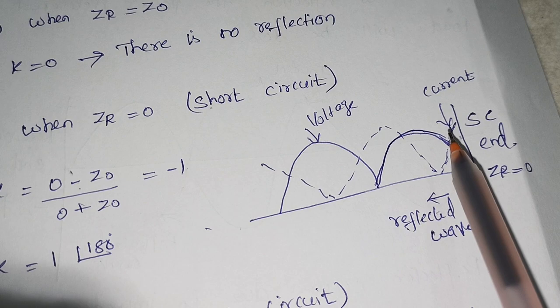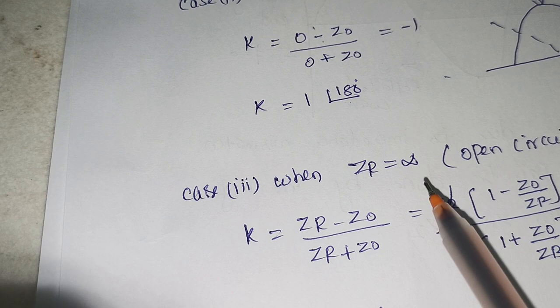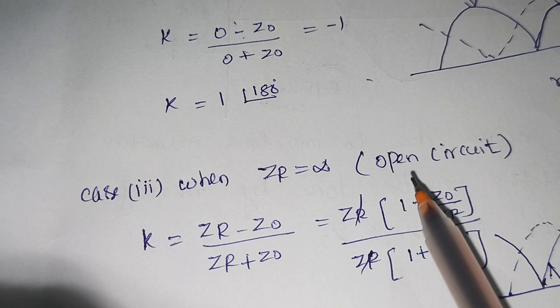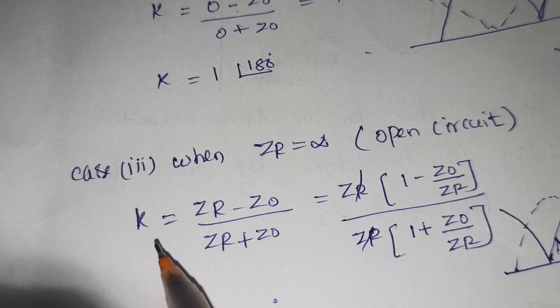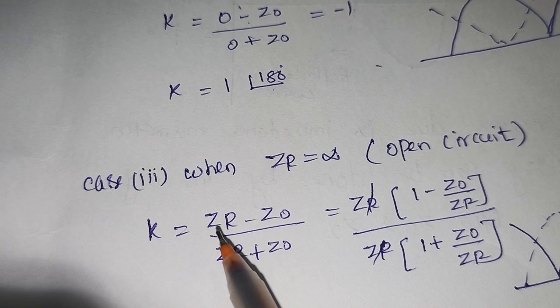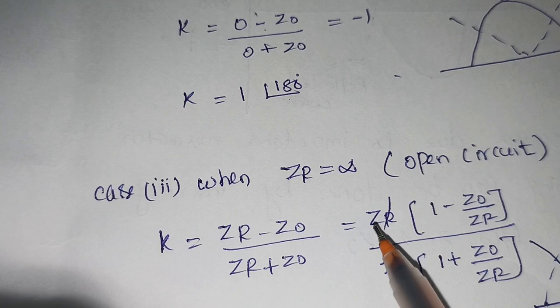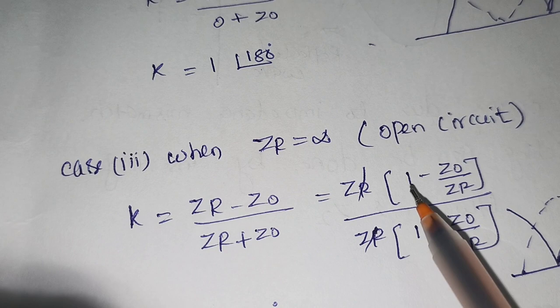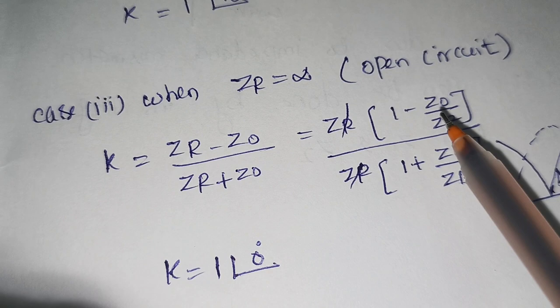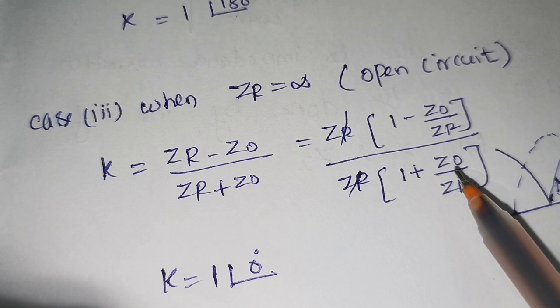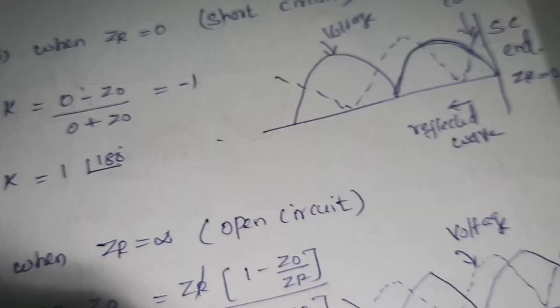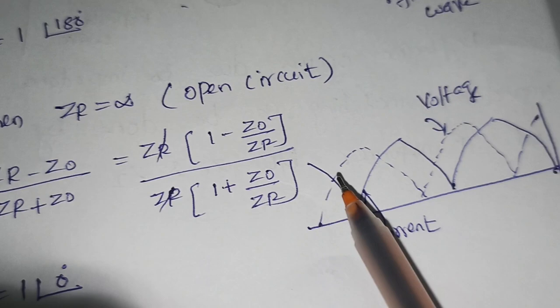The next case is when ZR becomes equal to infinity — that is when the load end is open circuited. The value of K is (ZR − Z0) / (ZR + Z0). Taking ZR outside both numerator and denominator gives (1 − Z0/ZR) / (1 + Z0/ZR). When ZR becomes infinity, Z0/ZR becomes 0, so K equals 1, which in polar form is 1∠0°. From the open end, the voltage will be maximum and current will be minimum.